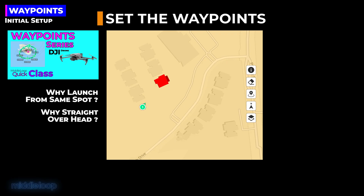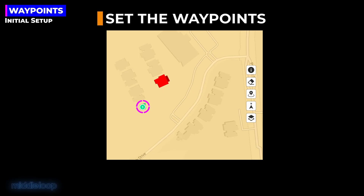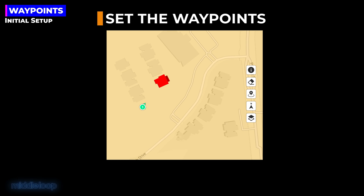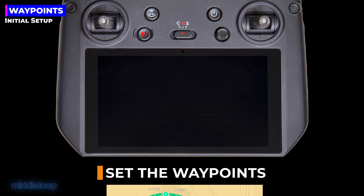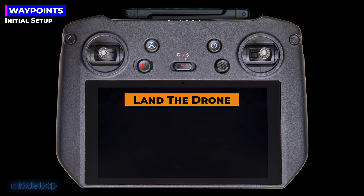As you'll see a little later, we'll also be returning to this same waypoint at the end of our mission. Since we didn't know what angle we would eventually use in our time-lapse video, we set up our waypoints to completely encircle the construction site. We put one waypoint on each of the corners and one on each of the four sides for a total of nine waypoints, which allowed for a lot of flexibility during post-production. After setting up the waypoint straight overhead, we then flew to the first coordinate where we would begin capturing images. Once there, we framed up the shot, including the tilt of the gimbal, and set the waypoint. Then we flew to the remaining coordinates, setting those waypoints. With all nine waypoints set, we landed the drone and saved the mission.